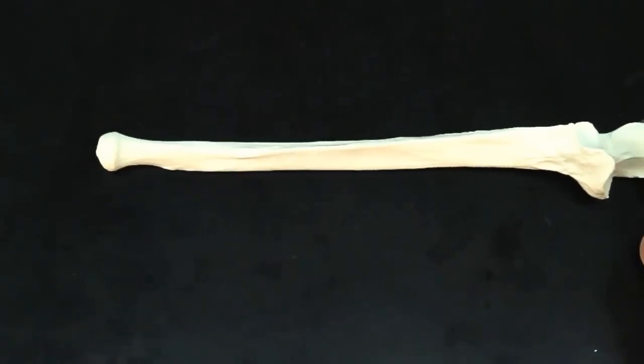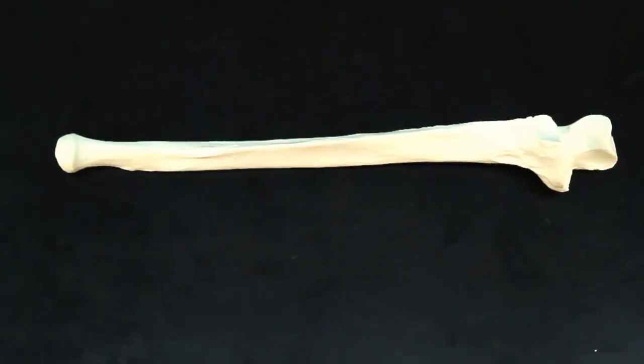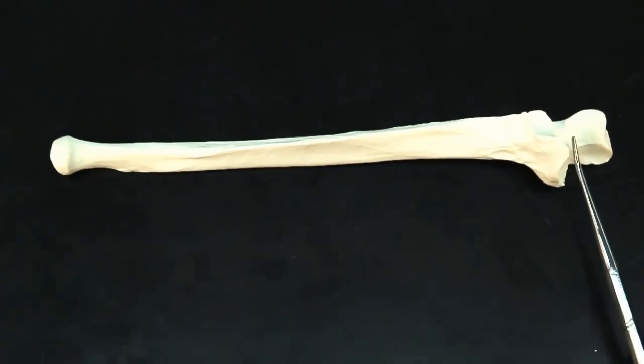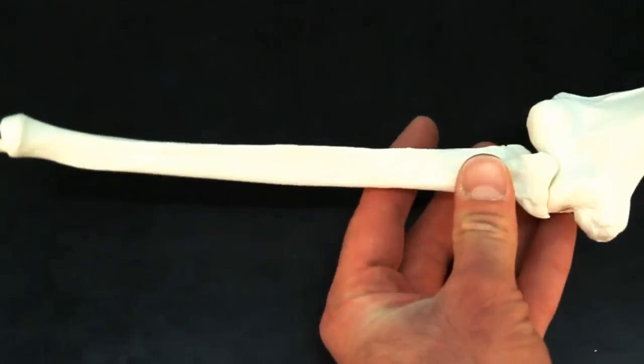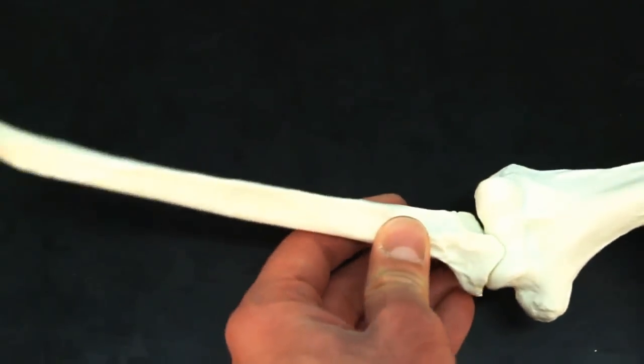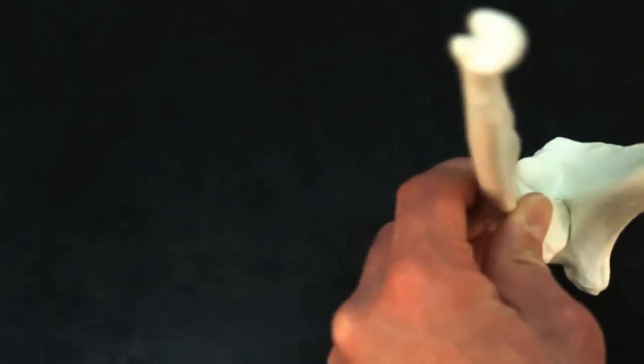So to figure out, is this a right or a left ulna? The trochlear notch here must face anterior. The reason being is it forms an articulation with the humerus. It fits just like this to allow your arm to flex and extend.